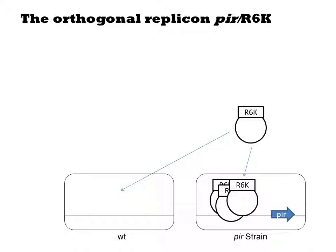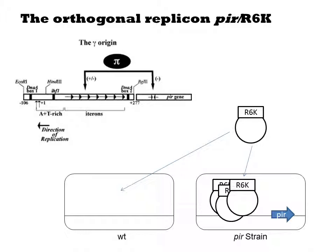First is the R6K pi conditional origin of replication. R6K is the origin of replication. E. coli is not able to replicate plasmids containing this origin, but if the cell contains the pi gene, it can be transformed by such plasmids. Pi encodes the protein pi, which binds to short repetitive sequences within R6K called iterons, and these result in initiation of replication.